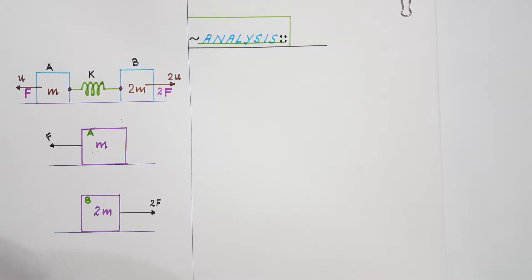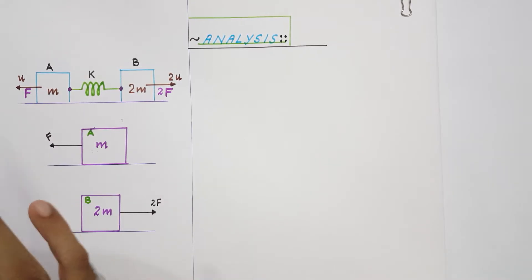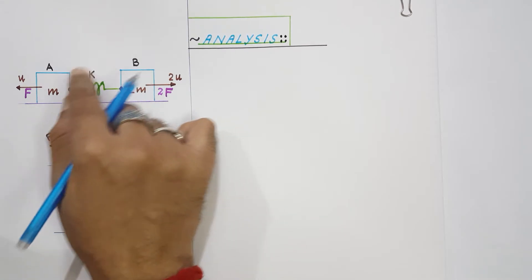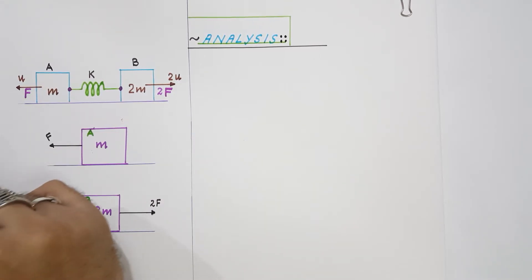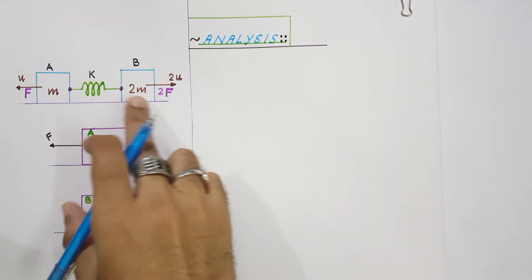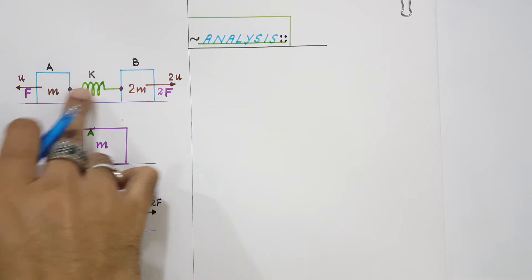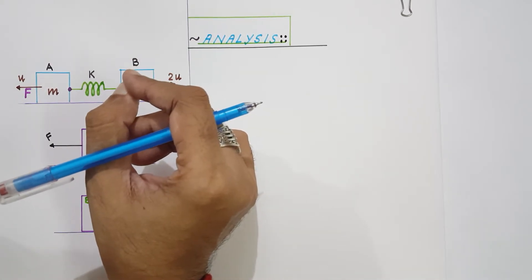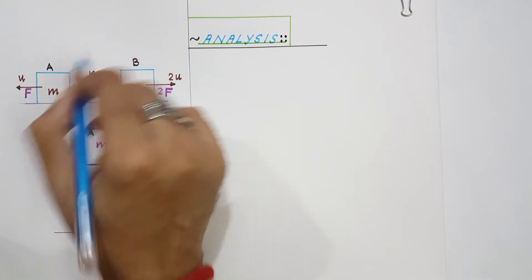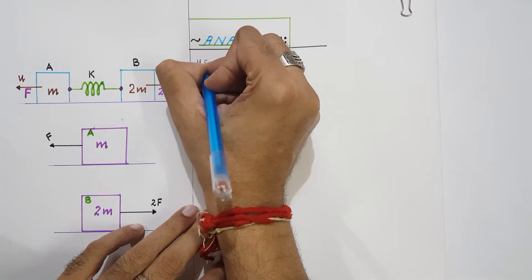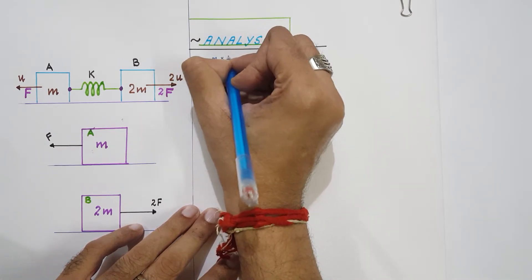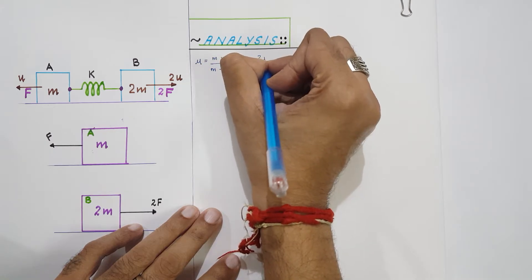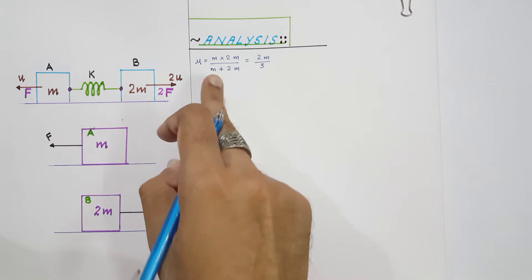The first and foremost approach you must understand is that these two masses are interacting with each other by the spring force because they are connected by a spring. So we can convert this two-body problem into a one-body problem by using the concept of reduced mass. The reduced mass of this system, μ, equals m₁·m₂ / (m₁ + m₂) = m·2m / (m + 2m) = 2m/3.